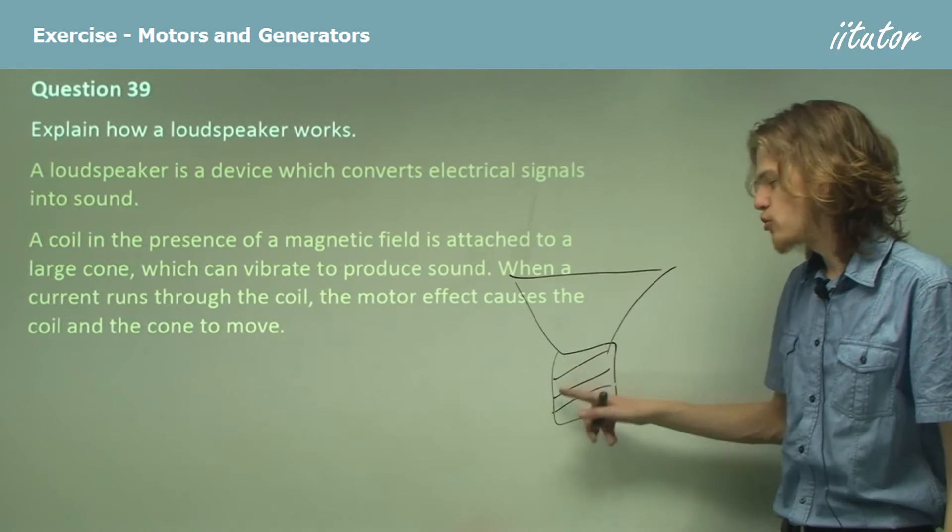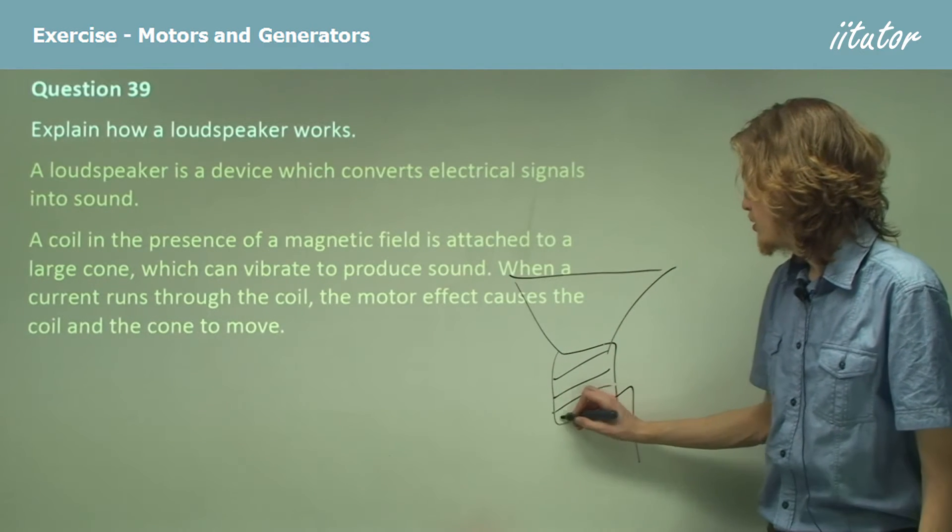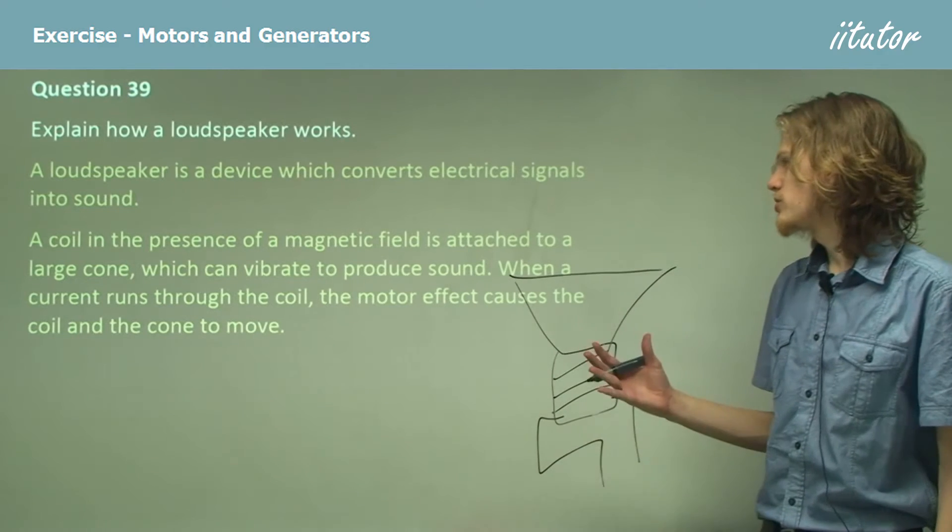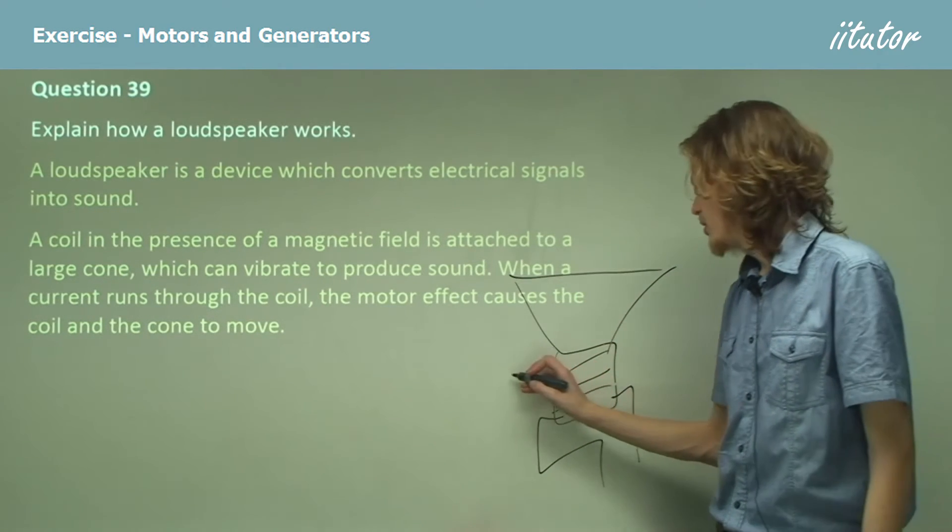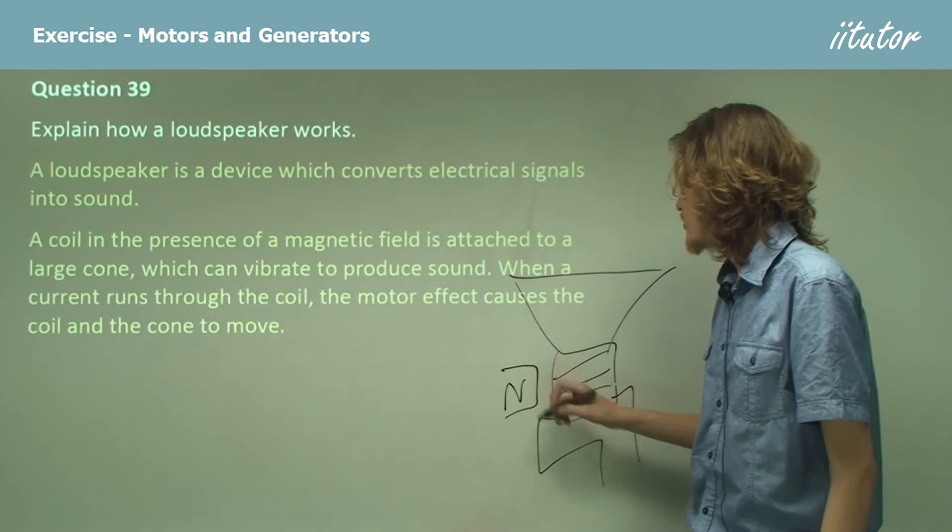Now when a current runs through the coil, the motor effect causes the coil and the cone to move because it will be in the presence of a magnetic field.